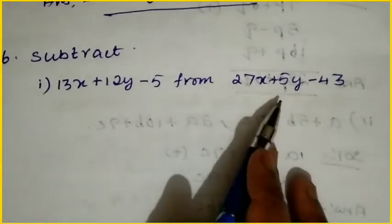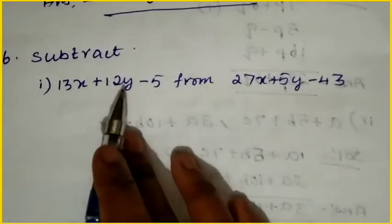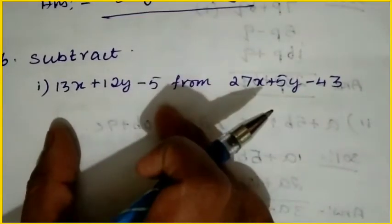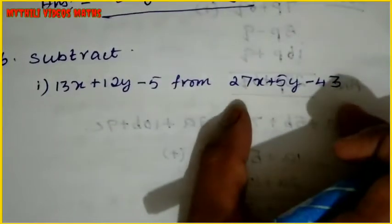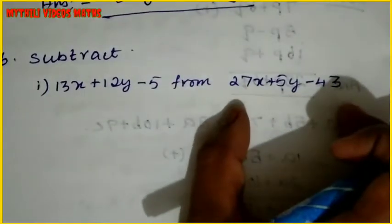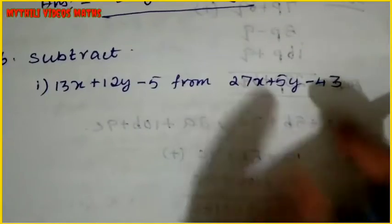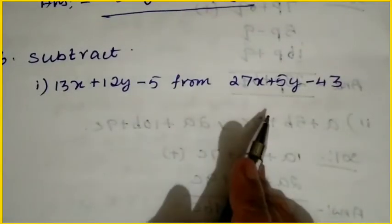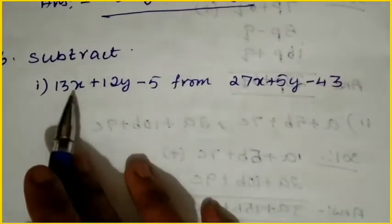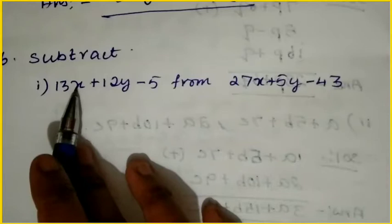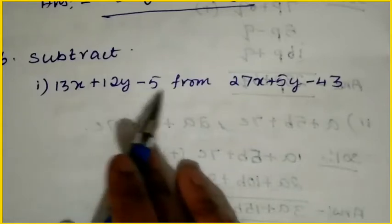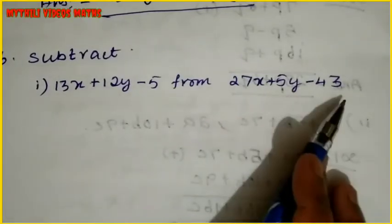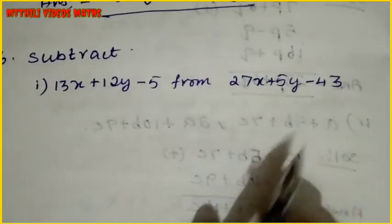We are going to subtract from the two algebraic expressions. Just check whether it is like terms or unlike terms. We have x term, y term, constant term here. Same thing here: x term, y term, constant term. So the like terms are correct.